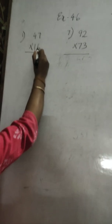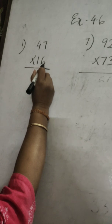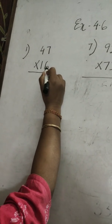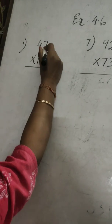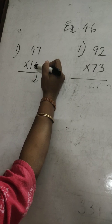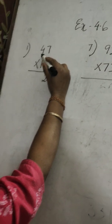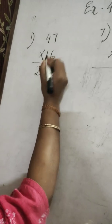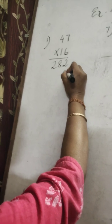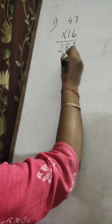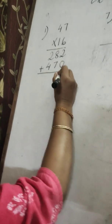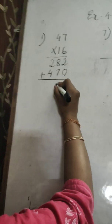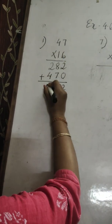First, you multiply the ones digit of the multiplier with the two-digit number 47. So 6 multiplied into 47: 6 sevens are 42, carry 4. 6 fours are 24 plus 4 is 28. To multiply with the second digit, leave the first place and put 0. Then 1 seven is 7, 1 four is 4. Now add: 2 plus 0 is 2, 8 plus 7 is 15 carry 1, 4 plus 2 is 6 plus 1 is 7. So the answer is 752.